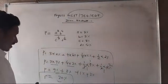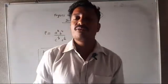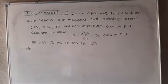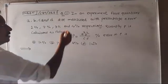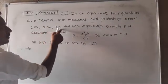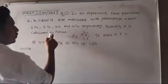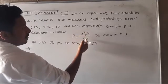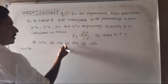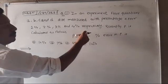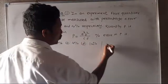Now let's look at a NEET level question. In an experiment, four quantities a, b, c, and d are measured with percentage errors 1%, 2%, 3%, and 4% respectively. The quantity P is calculated as P equals a cube into b square, divided by c into d. Find the percentage error in P.